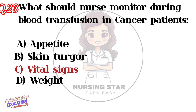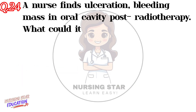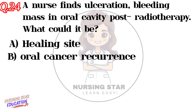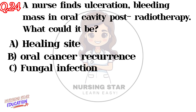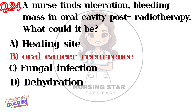Question number twenty-four: A nurse finds ulceration and a bleeding mass in the oral cavity post-radiotherapy. What could it be? Option A: Healing site. Option B: Oral cancer recurrence. Option C: Fungal infection. Option D: Dehydration. Correct answer: B — Oral cancer recurrence.